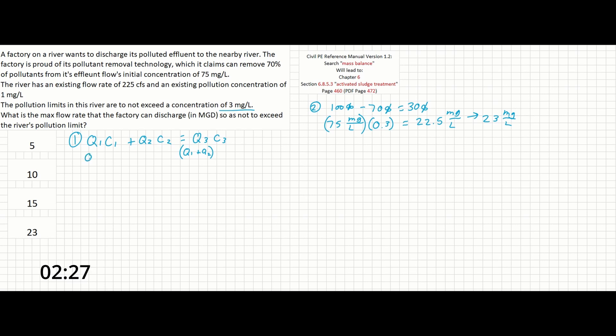Note that these terms could have been c2 and q2 as well if you had called the river's flow and pollution concentration q1 and c1 instead. Speaking of the river, its flow and concentration is given directly and can also now be added to our equation. So the river's flow rate is 225 cubic feet per second, and the pollution concentration is 1 milligram per liter.